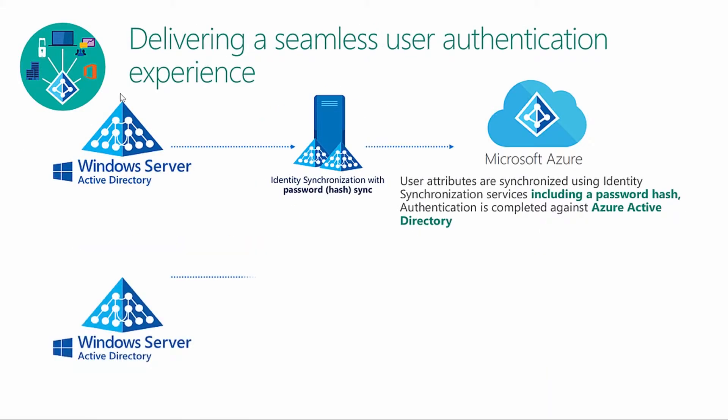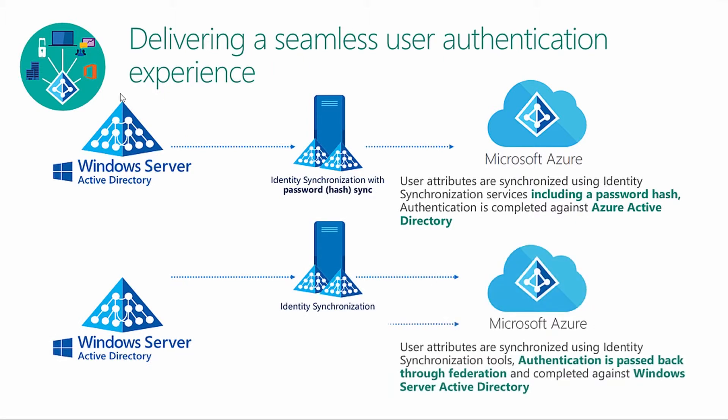We want to deliver a seamless user authentication experience, and there are two major ways to accomplish this. One is by syncing a password hash up to Azure Active Directory. It's very important to point out this is a password hash, not the actual password — in essence it's a hash of a hash. From a security perspective, we don't have to worry about it being easily traceable or cracked to get the user's password.